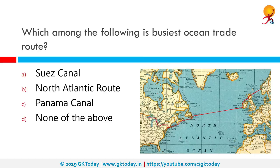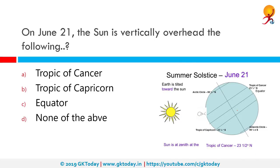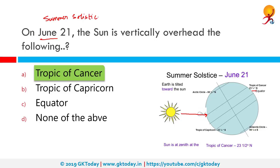Which among the following is the busiest ocean trade route? The correct answer is the North Atlantic Route, which connects European states with the American part — it has been the busiest trade route for a long time. On June 21st, the sun is vertically overhead the Tropic of Cancer. June 21st is also known as the summer solstice in the Northern Hemisphere, and accordingly the winter solstice in the Southern Hemisphere.